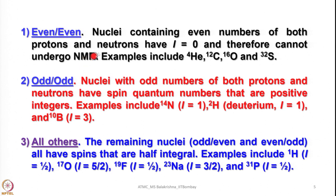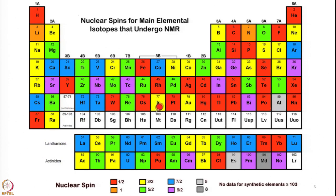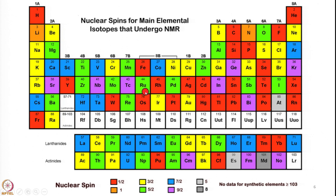So, even-even nuclei are NMR inactive, whereas odd-odd and all odd-even or even-odd combinations are NMR active. Of course, one should know how much of such isotopes are present. The periodic table clearly shows different types of nuclear spin: those in red have I equals 1/2, yellow have I equals 3/2, blue have I equals 7/2, orange have I equals 1, green have I equals 5/2, and violet have I equals 9/2. The majority of elements possess nuclei with NMR active I values.